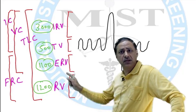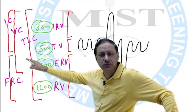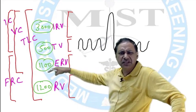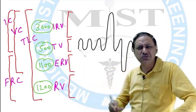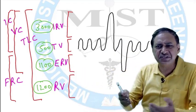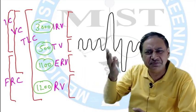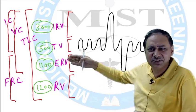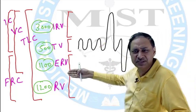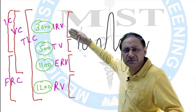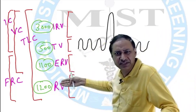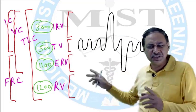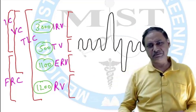Accordingly you can calculate the capacities also. Don't go strictly for these values — there may be variation in terms of height, weight, age, sex, and race. Indian values may be 25% less, females may be 25% less. So just take these as a rough idea.